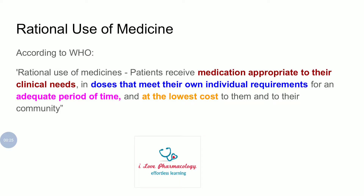According to the WHO — World Health Organization — rational use of medicines is defined as: the patient receives medication appropriate to their clinical needs, in the doses that meet their own individual requirements, for an adequate period of time.